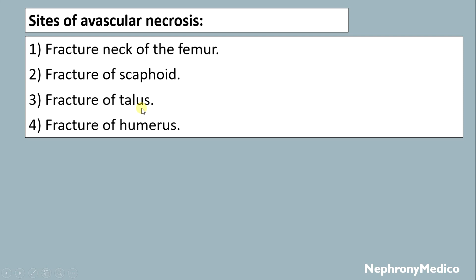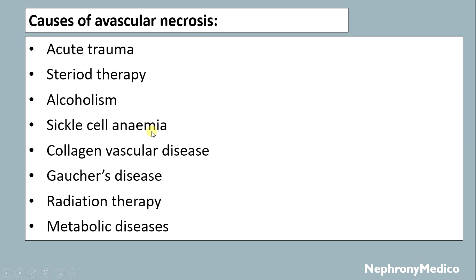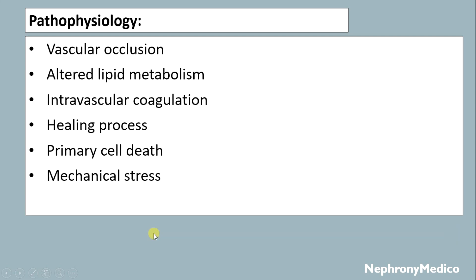Other sites include fracture of the talus and fracture of the humerus. Causes of avascular necrosis include acute trauma, steroid therapy, alcoholism, sickle cell anemia, collagen vascular disease, Gaucher's disease, radiation therapy, and metabolic diseases.